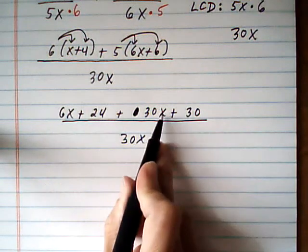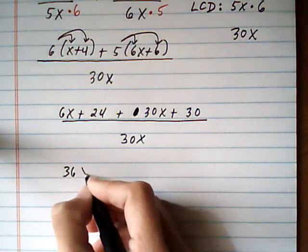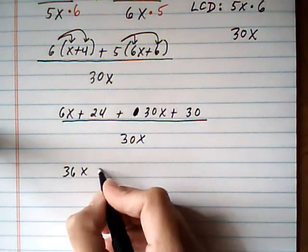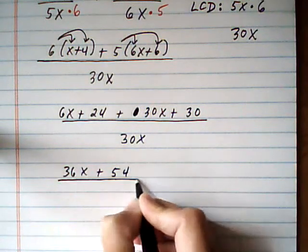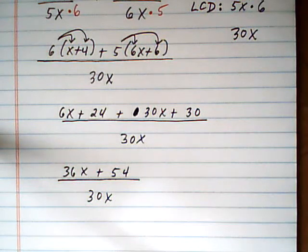So we've got 6x and 30x combining like terms, give us 36x. And then 24 and 30 combining like terms, give us 54, all over 30x. So now it's simplified. Our next step is to figure out if we can cancel anything out.